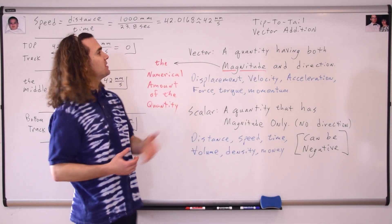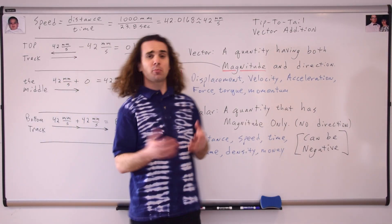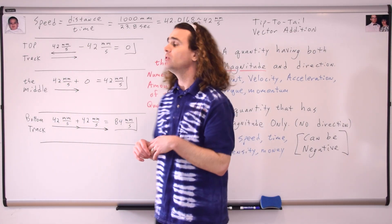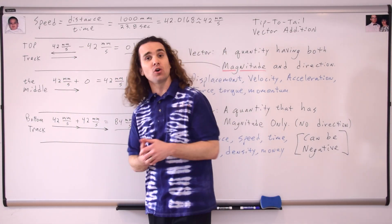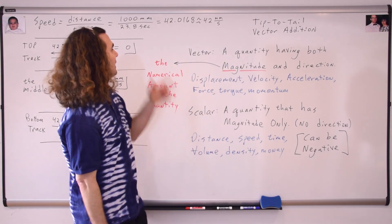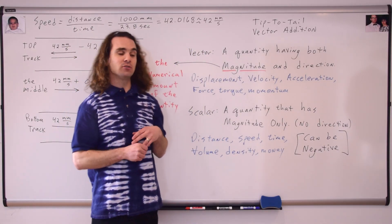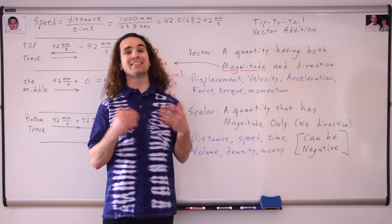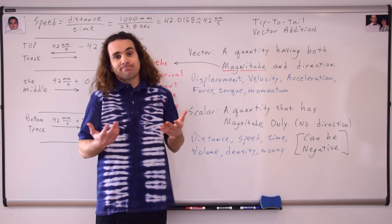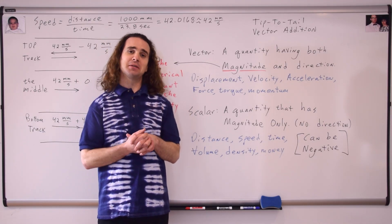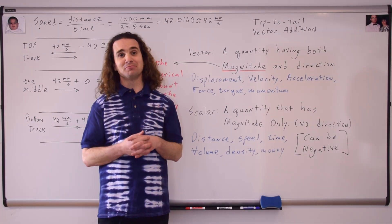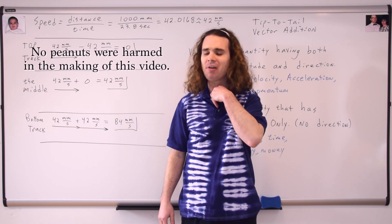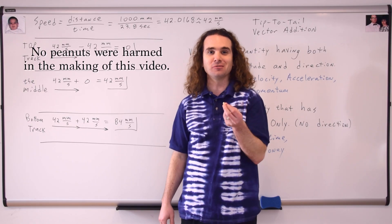Quick review. Tip to tail vector addition is something that you probably already inherently know how to do. We illustrated that using the slow velocity racer. A vector is a quantity that has both magnitude and direction. A scalar is a quantity that has magnitude only and does not have direction. Thank you very much for learning with me today. I enjoyed learning with you. Oh wait, one landed in my shirt too. Thank you. Okay. Bye.